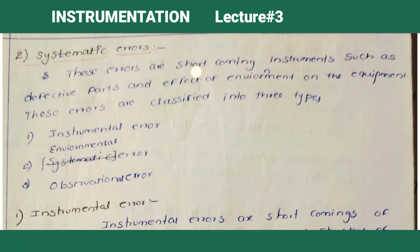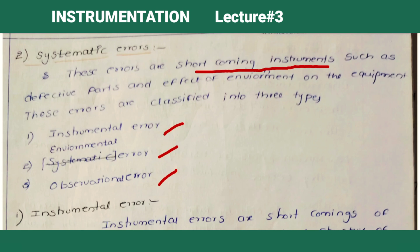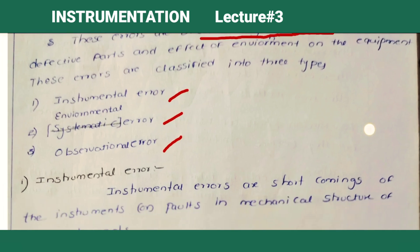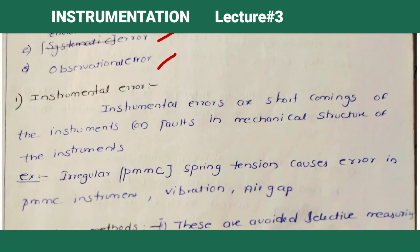Systematic errors are shortcomings of the instrument — internal or inbuilt faults that may appear in the instrument. Instrumental errors are the shortcomings or defective faults in the instrument's mechanical structure. For example, irregular PMMC spring tension can cause error in a PMMC instrument, as can vibration and air gap issues.